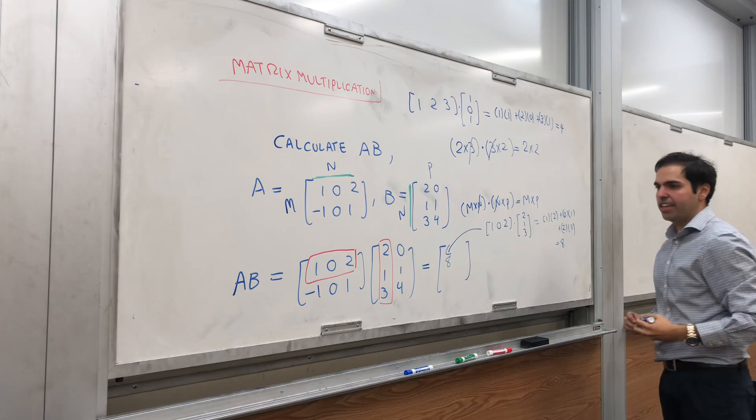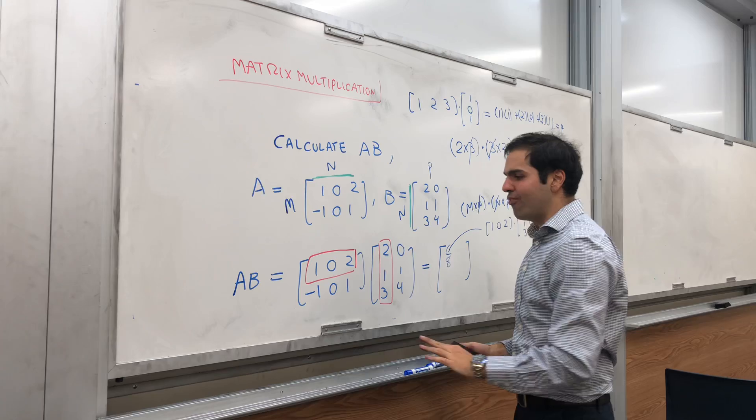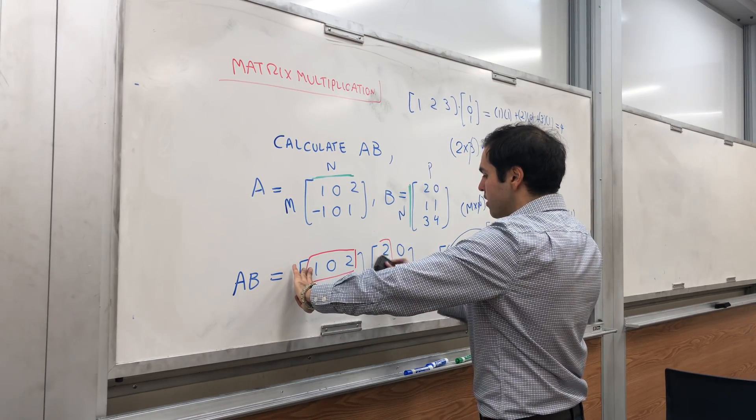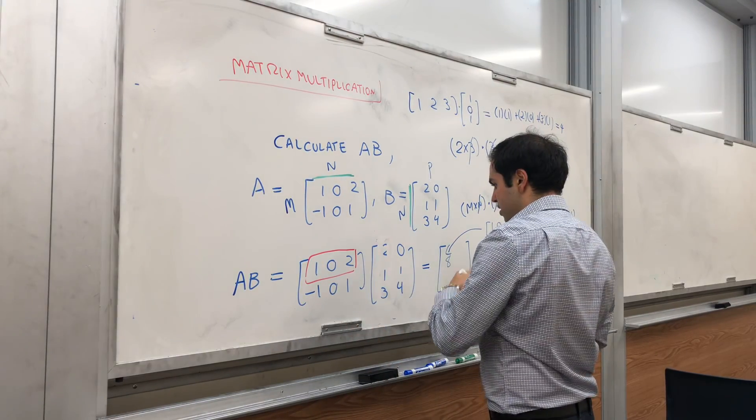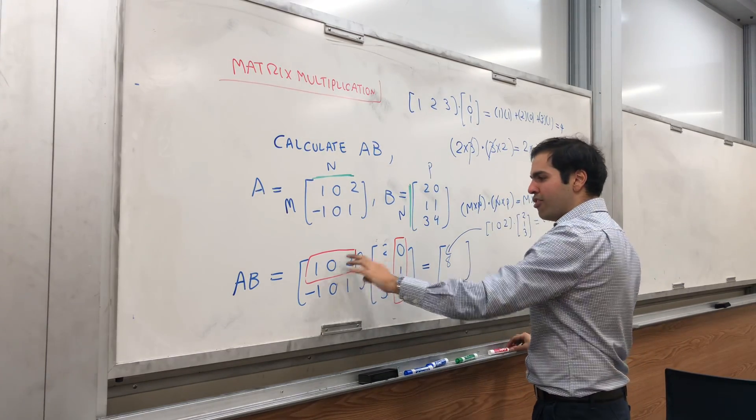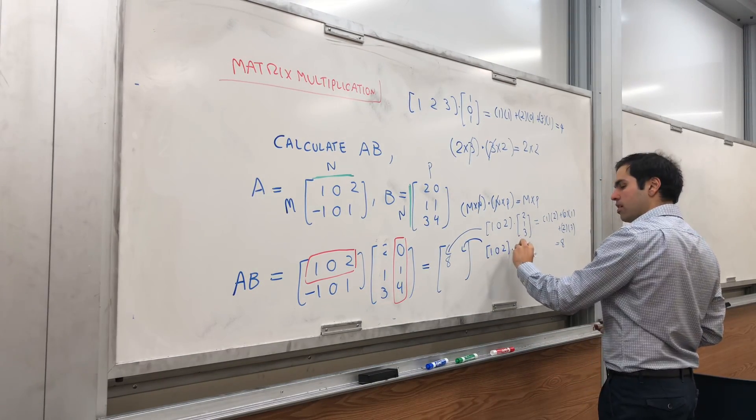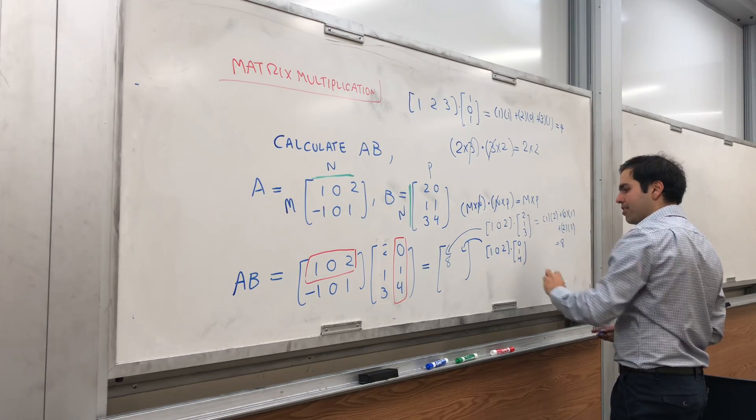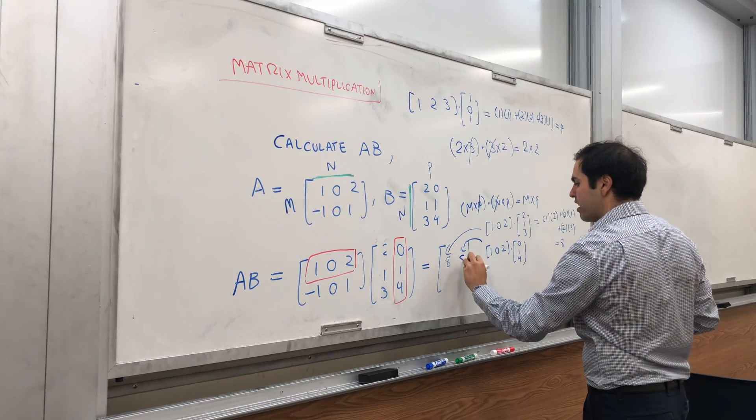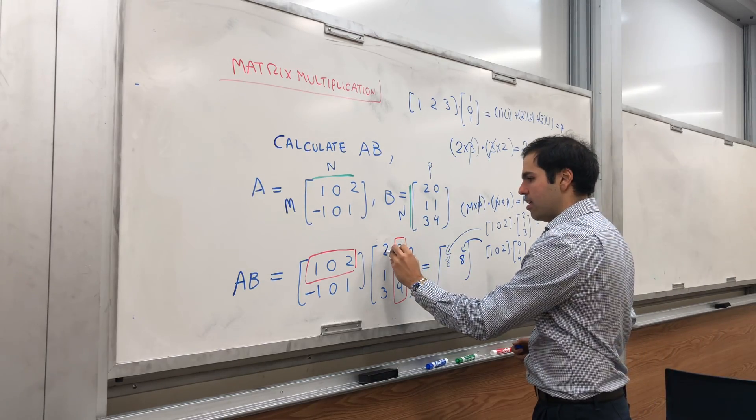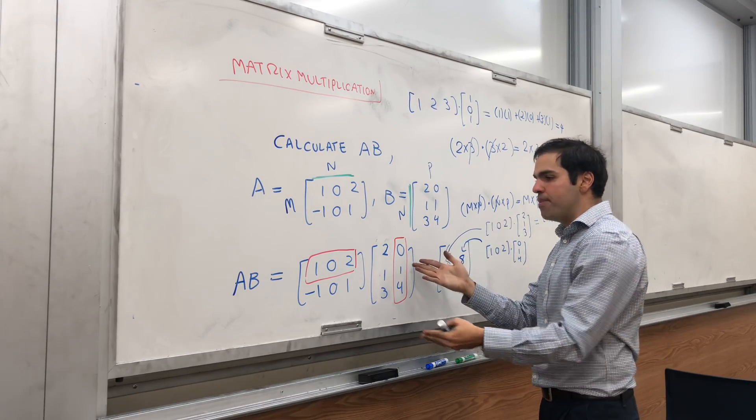So the first entry will be 8. Now the question is what do you do next? It should remind you a lot like foiling out. You keep the first row but this time you move on to the second column. So what you do next is you dot the first row with the second column. In other words, you calculate 1 0 2 dotted with 0 1 4. And if you do that, 1 times 0 is 0 plus 0 times 1 which is 0, 2 times 4 that's 8. If you had a bigger matrix you would move on to the next column but what's happening here?